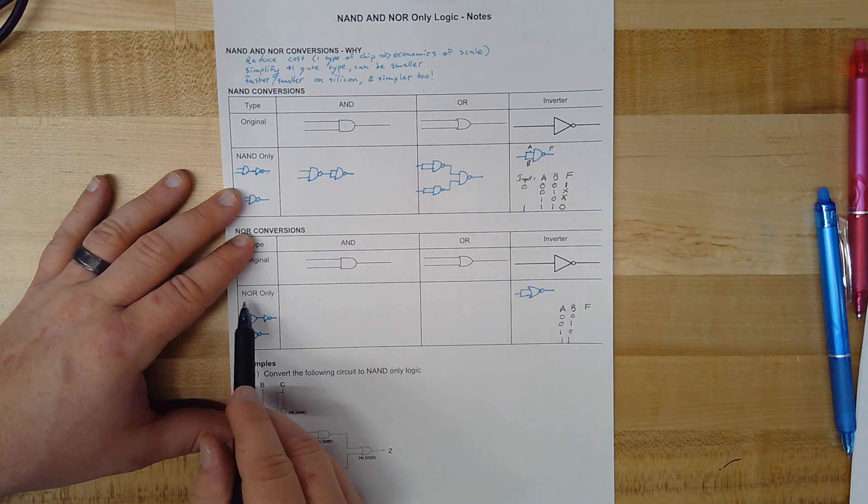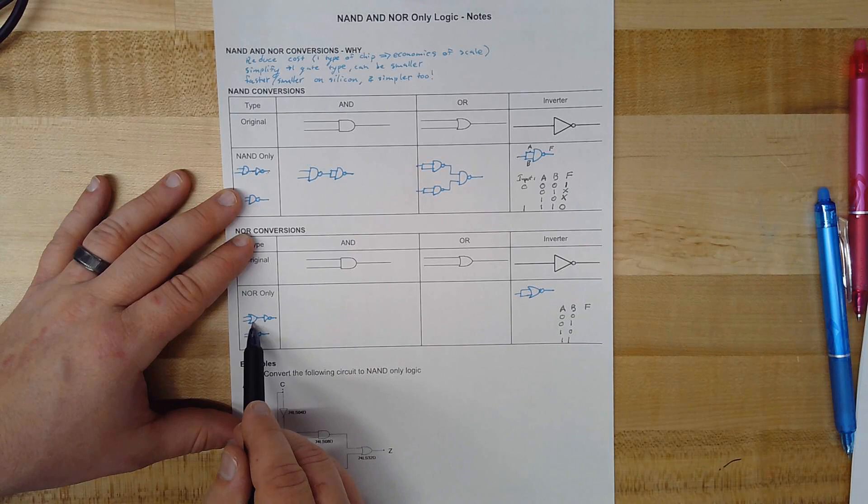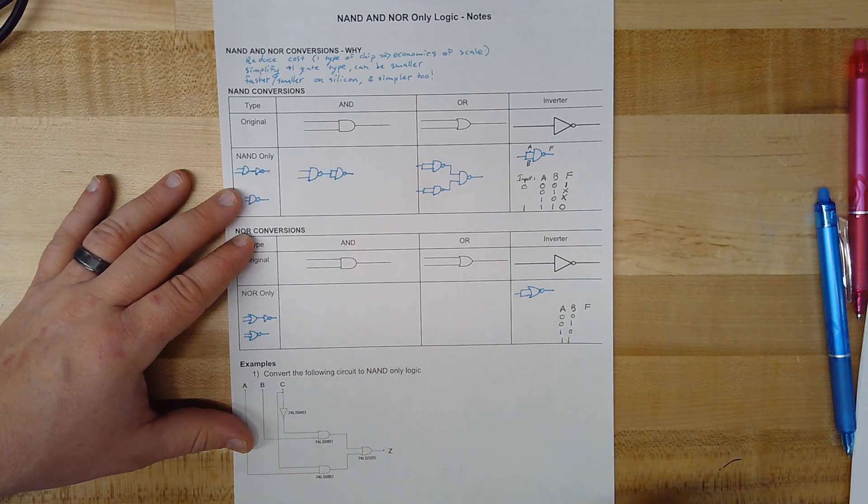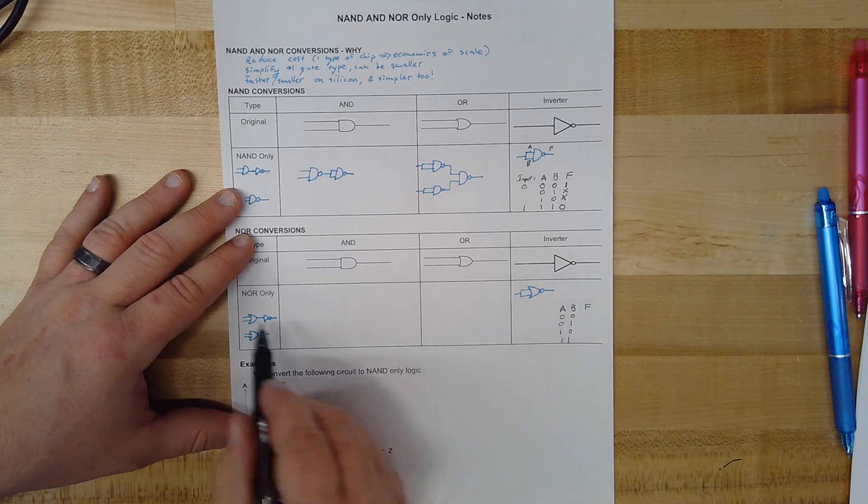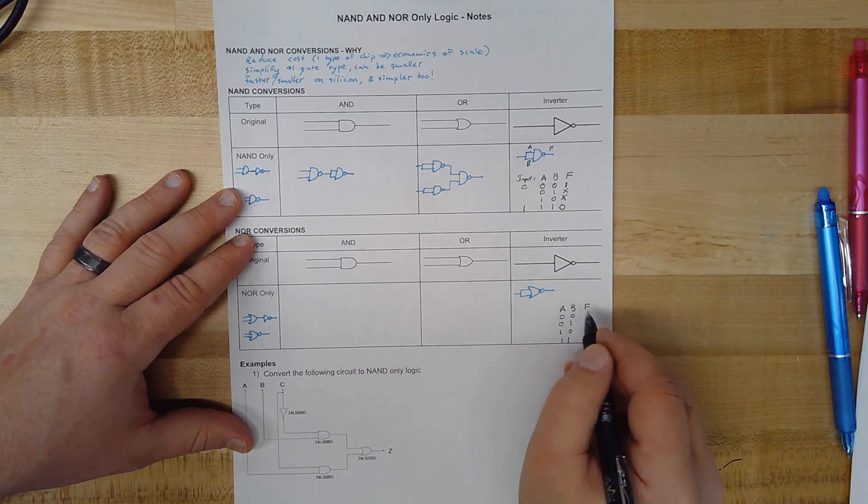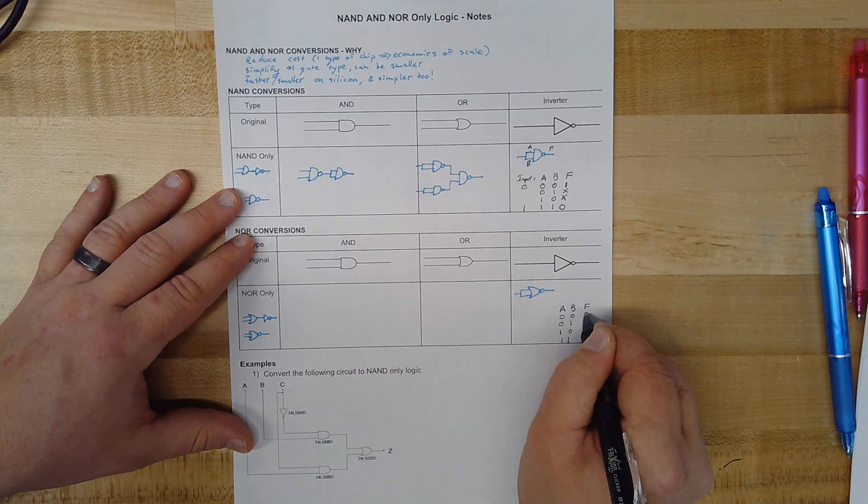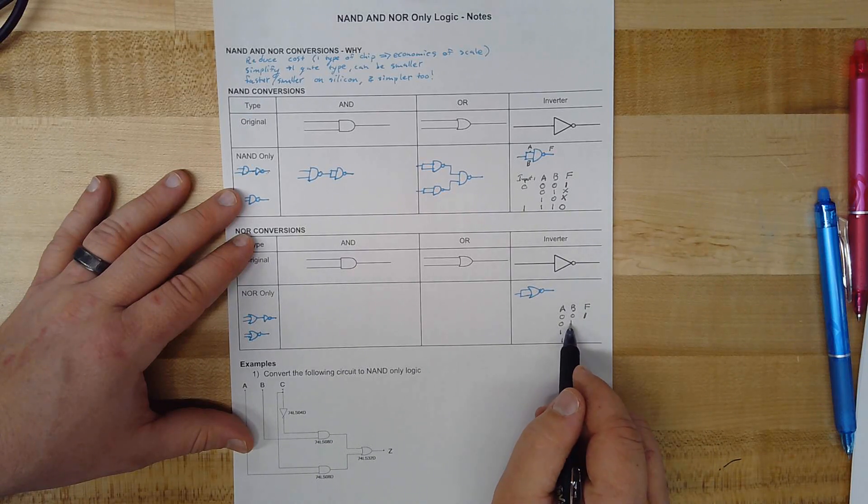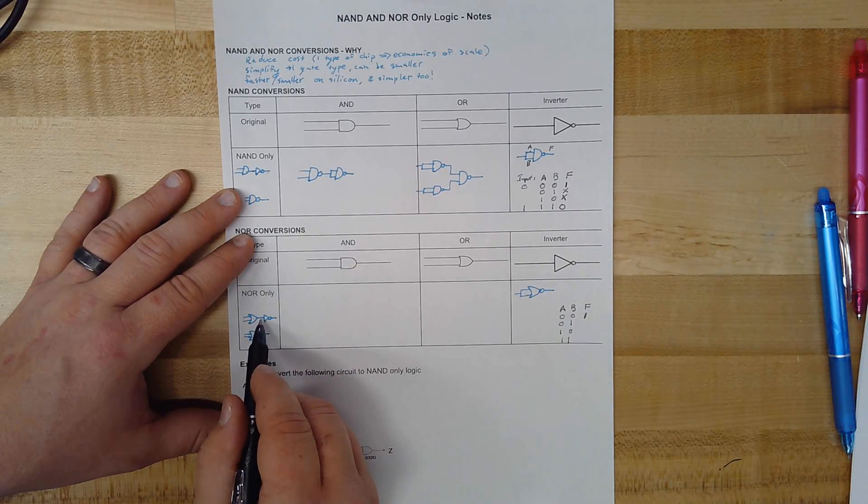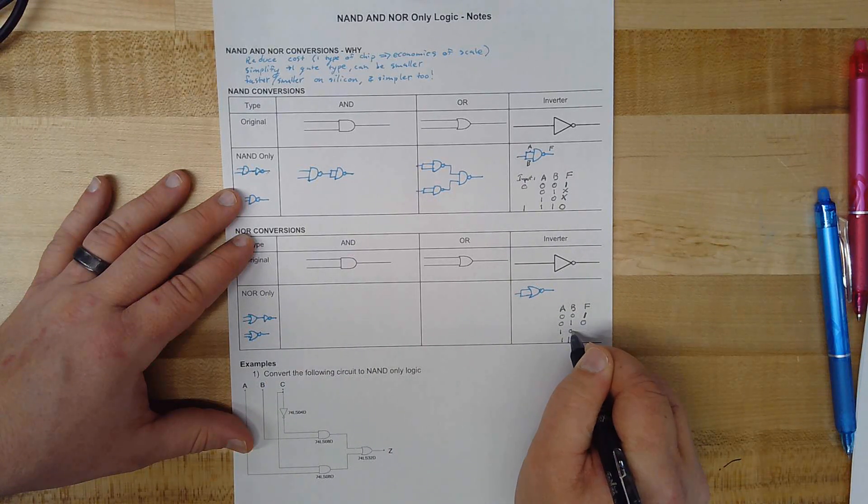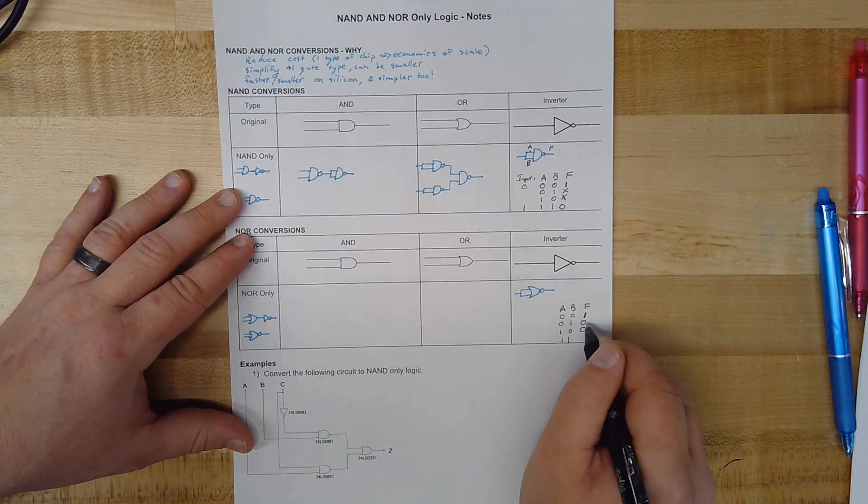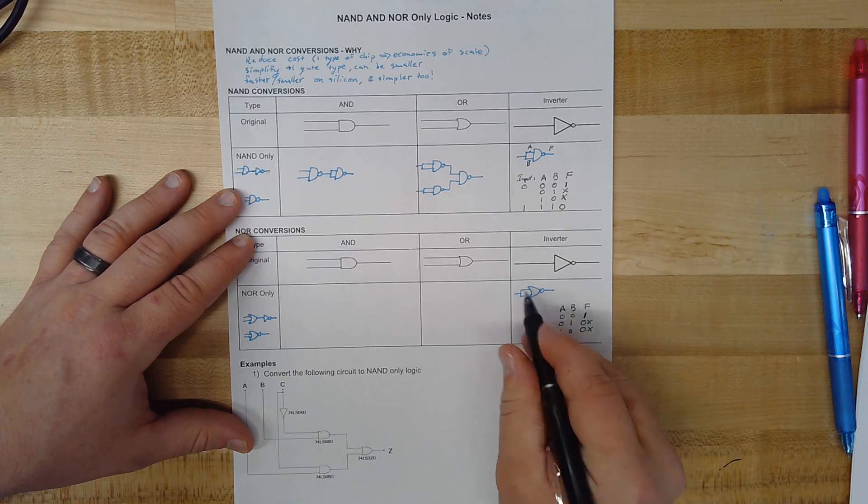Now remember, our NOR gate is an OR gate with an inverter after it. What that's going to mean for us is 0 or 0, right, is 0, inverted, is a 1. 0 or 1, right, is 1, inverted, gives us a 0. 1 or 0 is 1, inverted, gives us a 0. Now again, these cases will not happen because our inputs will always match.